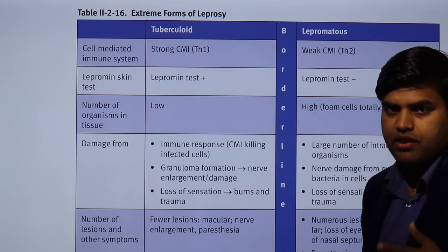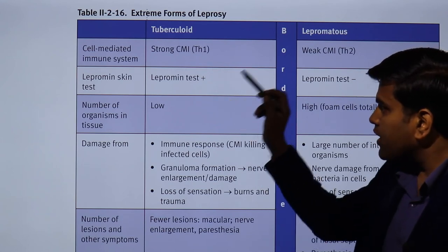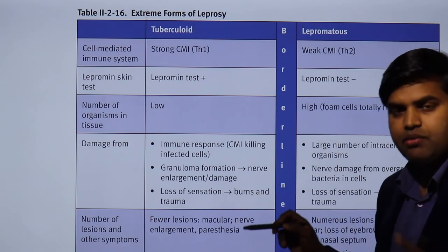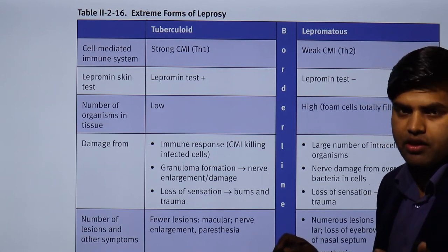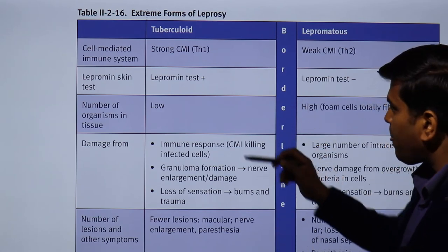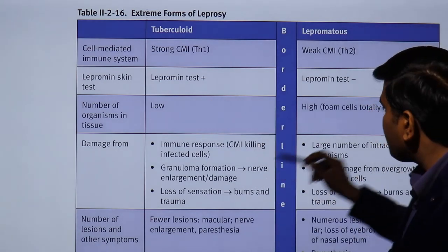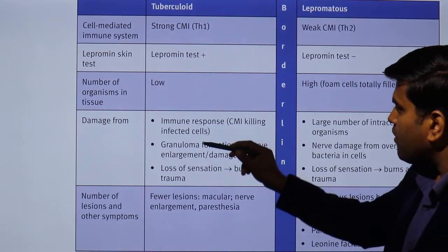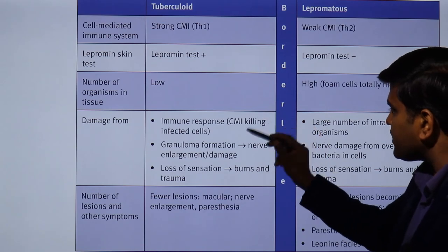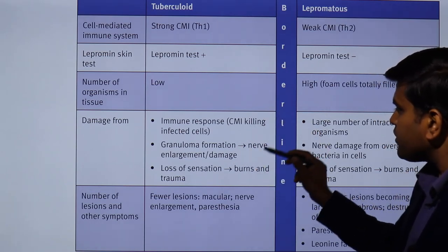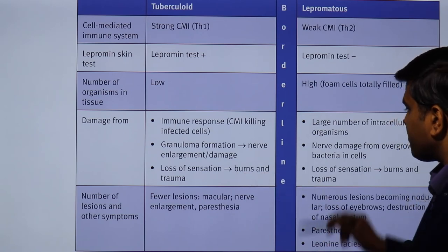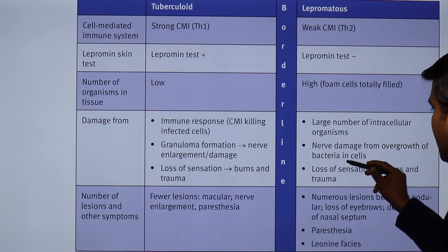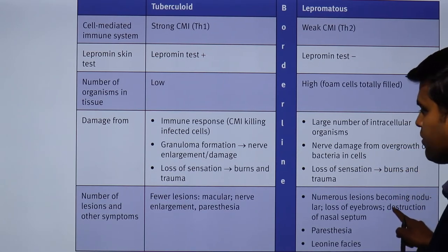A negative lepromin test does not rule out leprosy — it actually indicates the patient may be in the advanced lepromatous stage. Bacterial load is low in the initial stage and high in the lepromatous stage. The cell-mediated immunity response kills infected cells, causing granuloma formation, nerve enlargement, nerve damage, loss of sensation, and subsequently burns and trauma due to the insensitivity.